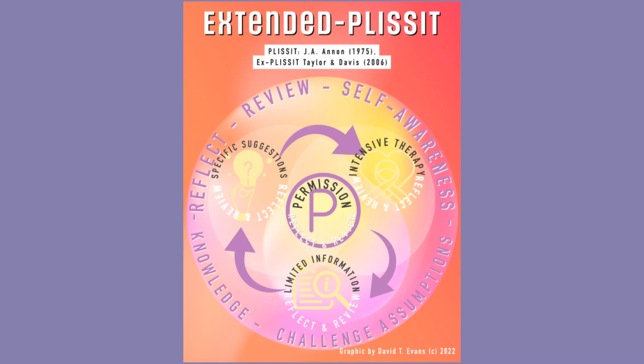The Taylor and Davis version puts PLISSIT into the middle, but at each and every stage it gets the practitioner to reflect on how things are going, and also to review whether they need to change, adapt, or move in different ways. The permission giving must be at the heart of each of the other sections — it's not just asking permission once, but revisiting this each and every time you talk about sexual health with your clients.